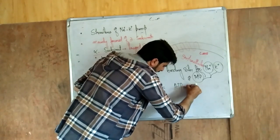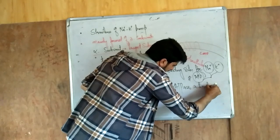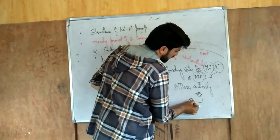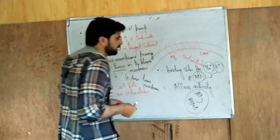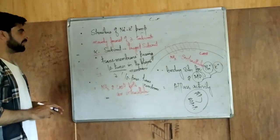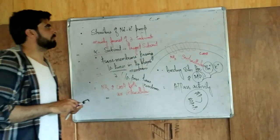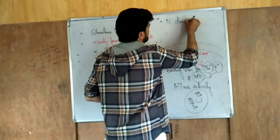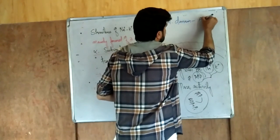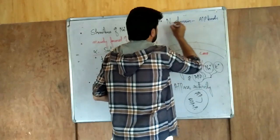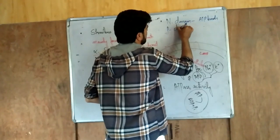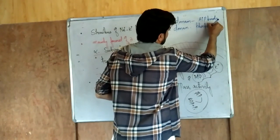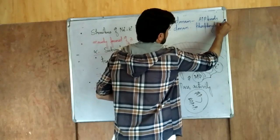The alpha subunit has two important domains. The first is the N domain, where ATP binds. The second is the P domain, where phosphorylation takes place.